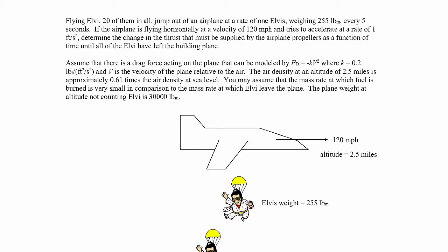In this example we have 20 flying Elvi who are in a plane and they're going to jump out of the airplane one Elvis every five seconds. We've got Elvi jumping out of this plane and we're told that each Elvis weighs 255 pounds mass. That's Elvis toward the latter half of his career.